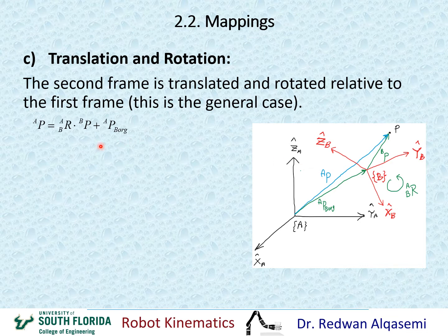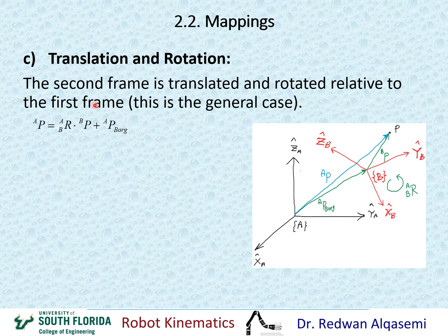In this case, I have two terms. The first term is a rotation term, and the second term accounts for translation. So P relative to A equals the rotation of B relative to A multiplied by P relative to B, plus P of the origin of B relative to A. This equation maps point P from being defined relative to frame B to being defined relative to frame A.